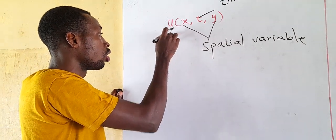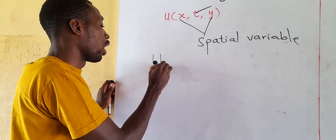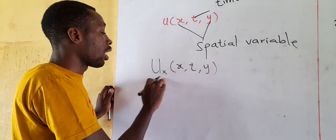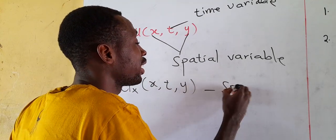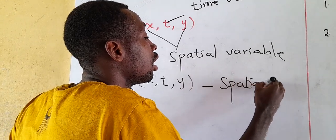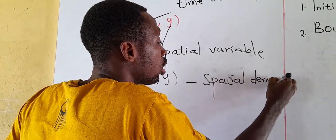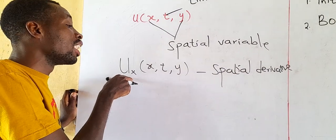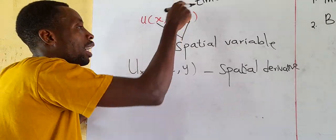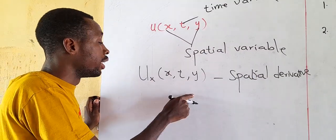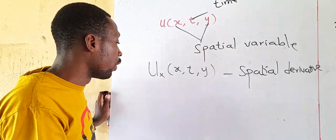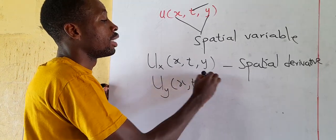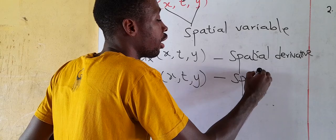If we find the partial differentiation of u(x, t, y) with respect to x, that derivative will be known as a partial derivative — because the differentiation is done with respect to a spatial (partial) variable. Similarly, differentiation with respect to y also gives a partial derivative.